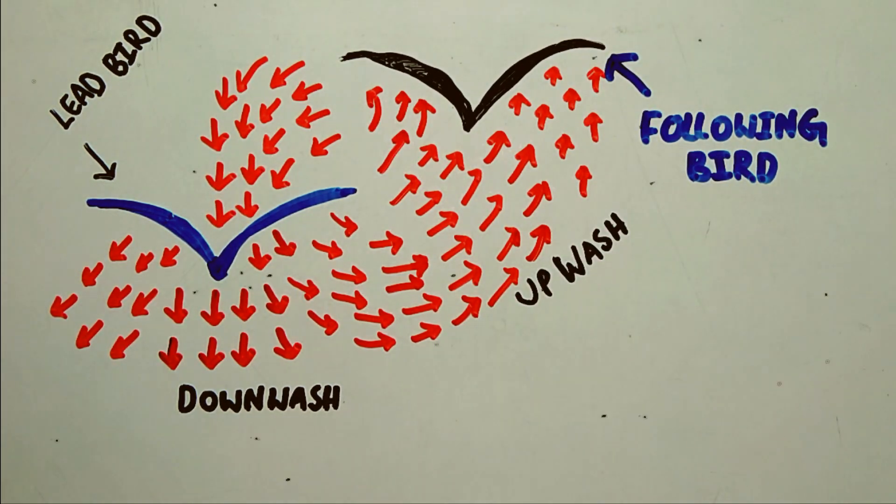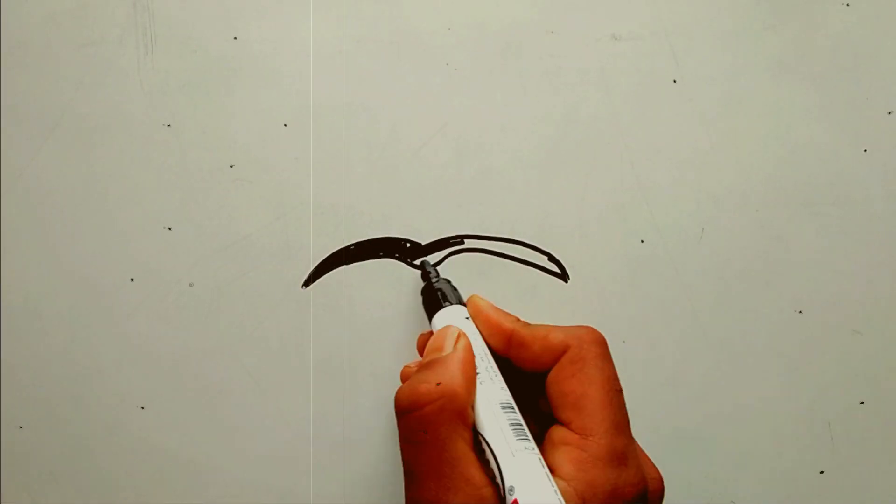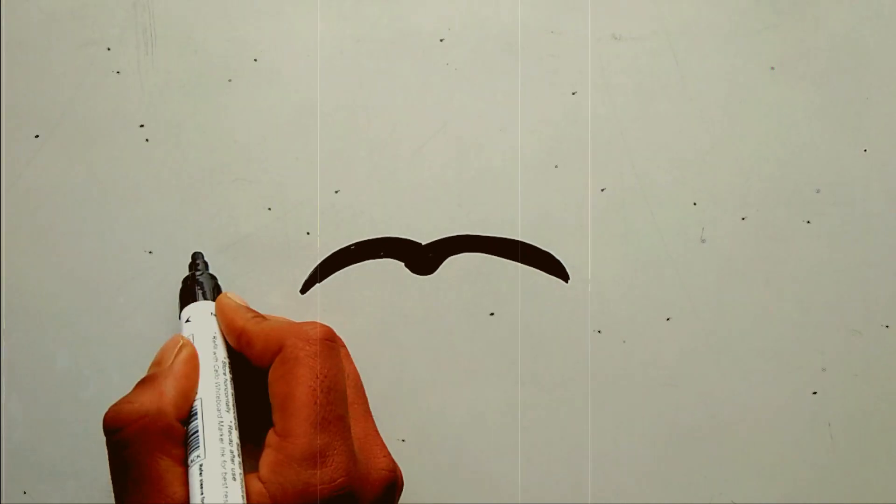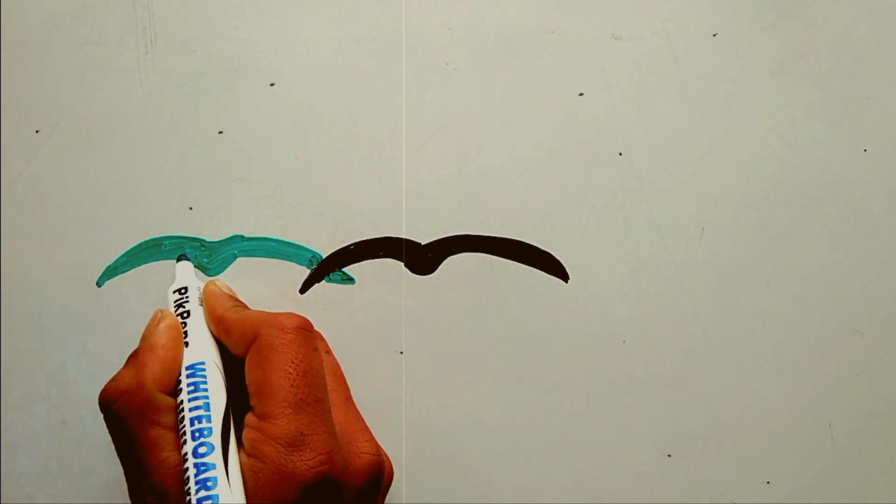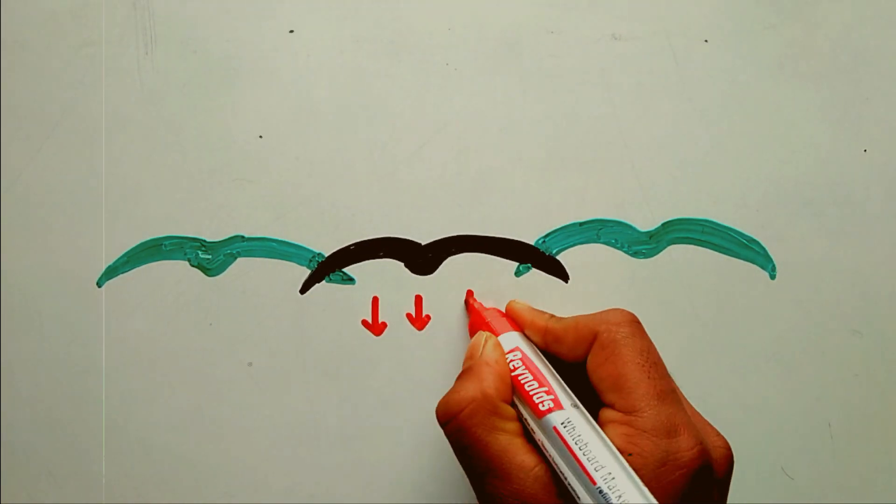So the savings can be significant over a long journey. To be in the upflow, a trailing bird should be off to one side of a leading bird, and a V formation is one of the best formations for placing the birds properly.